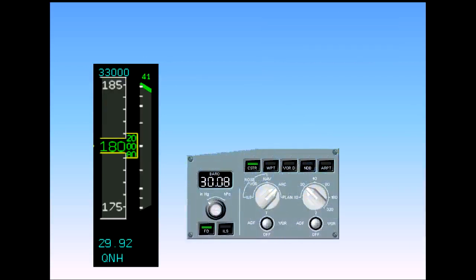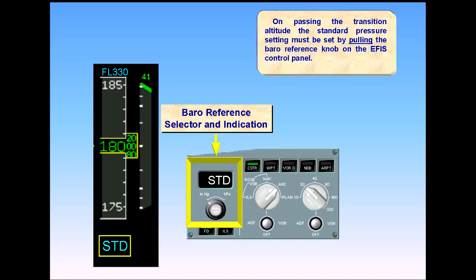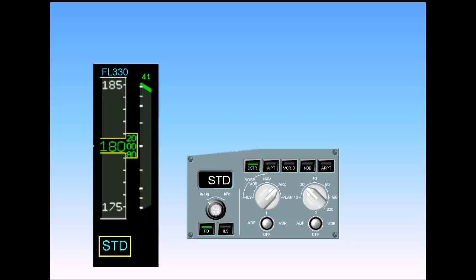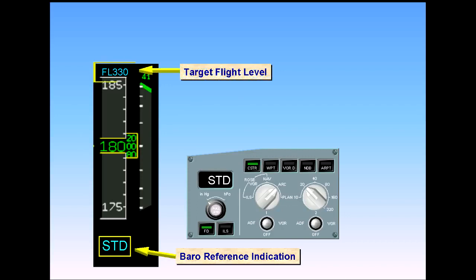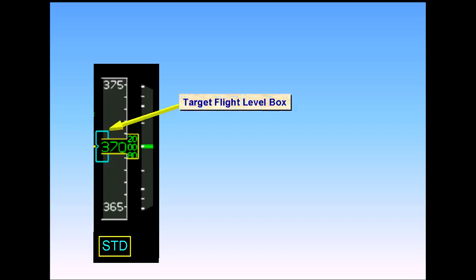On passing the transition altitude, the standard pressure setting must be set by pulling the barometric reference knob on the EFIS control panel. Notice that the barometric reference indication has changed to STD, and the target is now shown as a flight level. The aircraft is now cruising at flight level 370. Notice that the target flight level box is in the middle of the scale, and the vertical speed indication is at zero.